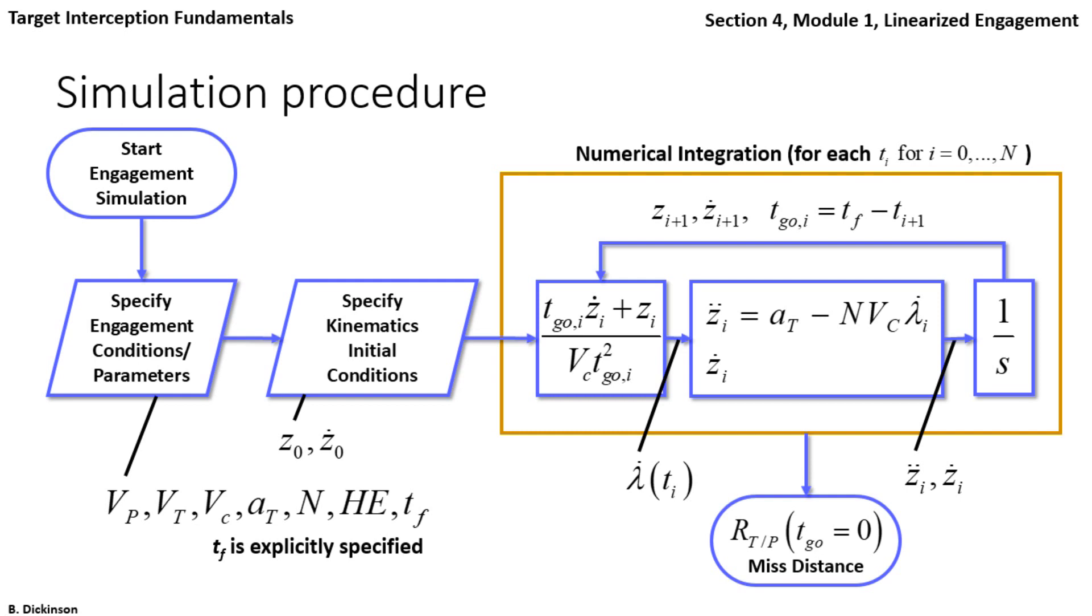At time to go zero, we achieve miss distance, record that, and any other quantities of interest.